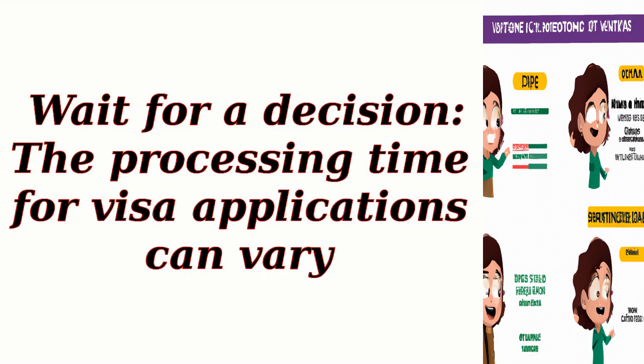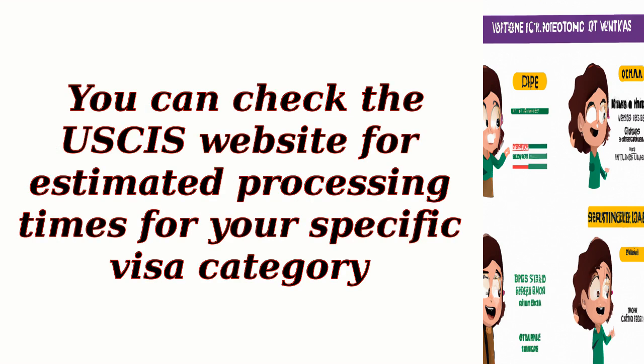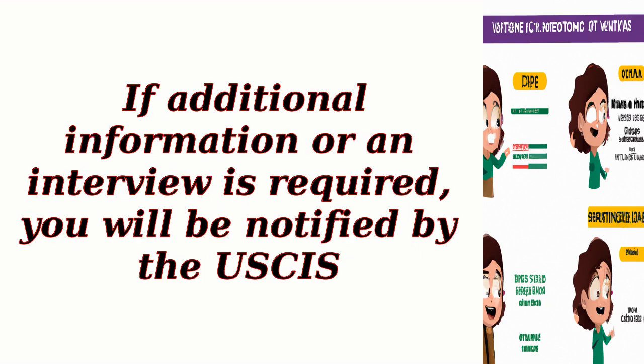Step 9: Wait for a decision. The processing time for visa applications can vary. You can check the USCIS website for estimated processing times for your specific visa category. If additional information or an interview is required, you will be notified by the USCIS.